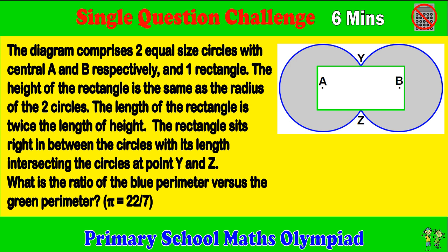The rectangle sits right in between the circles with its length intersecting the circles at point Y and Z. What is the ratio of the blue perimeter versus the green perimeter? Pi equals 22 over 7.